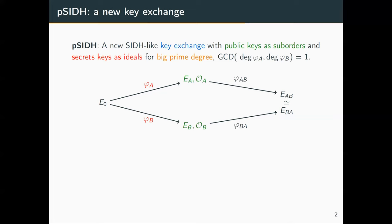The gap between the two, which is the SOIP, is really the key recovery problem of our key exchange. Using our new algorithmic tools, the participant will be able to use this suborder representation to complete this diagram, and compute the two curves E_AB and E_BA, which are isomorphic with one another. This will allow the two participants to derive a common secret key.